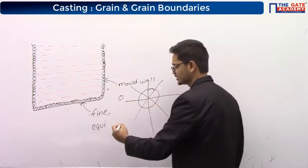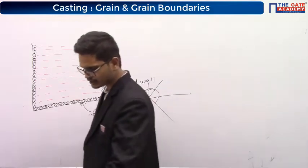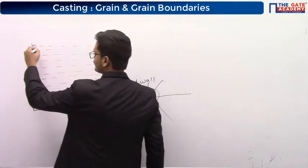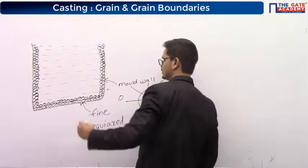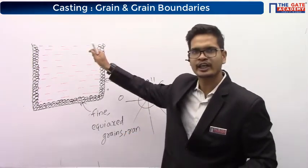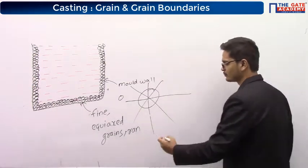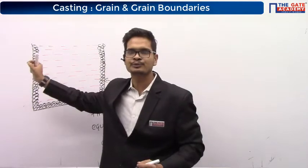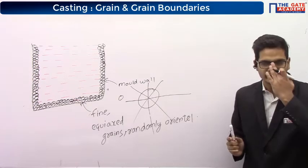These are very small grains that are circular, so they are called as fine equiaxed grains — equal about all the axes. They are randomly oriented. At random points, because of very fast cooling, the solidification started at random points; therefore the orientation is random. These fine equiaxed randomly oriented grains were formed because of very fast cooling.